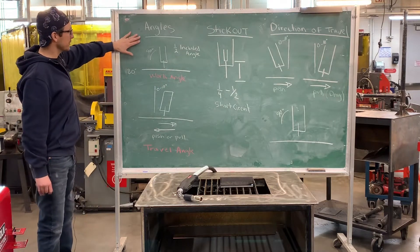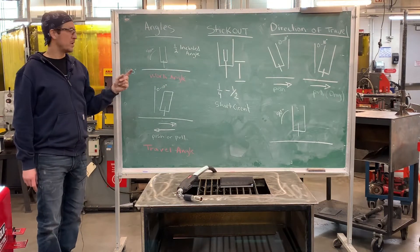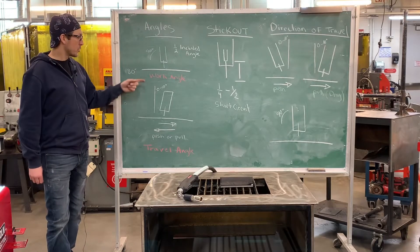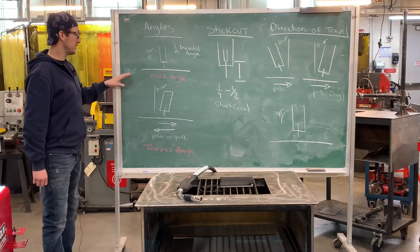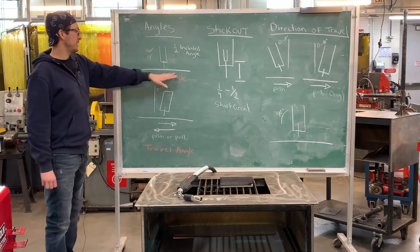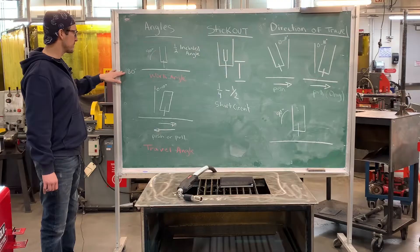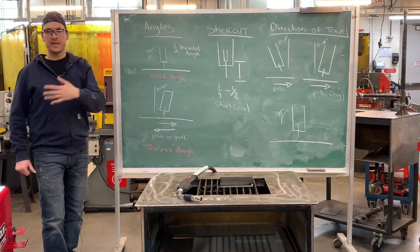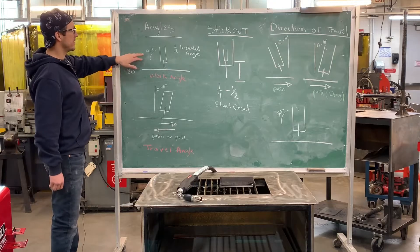When we talk about angles, we have two separate angles: work angle and travel angle. The work angle is our angle relative to the actual work, the plate we're welding on. If we have a plate that's 180 degrees, the rule of thumb is that we come in half the included angle. In this case, it would be 90 degrees.